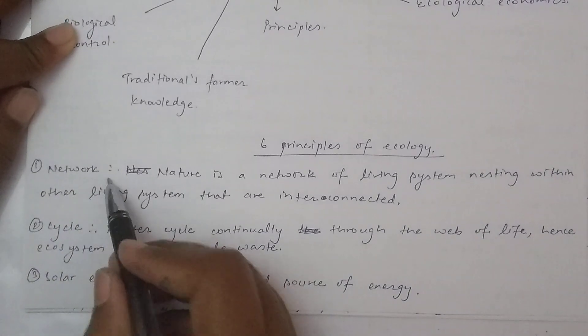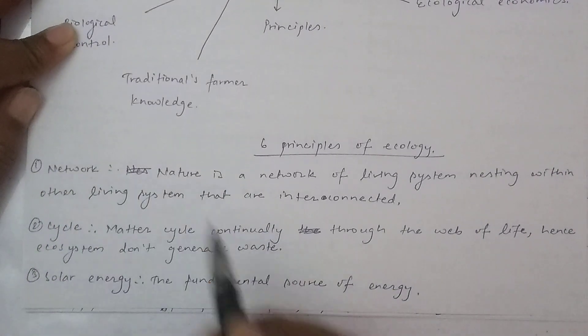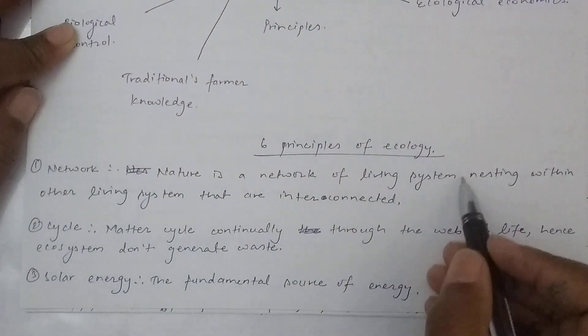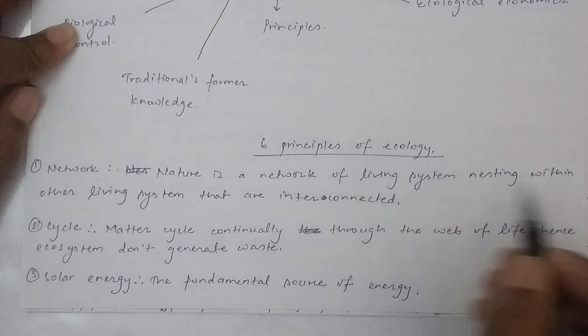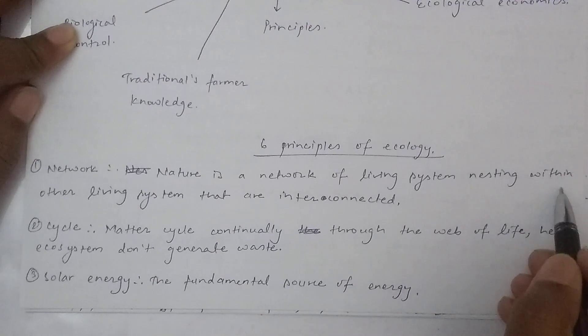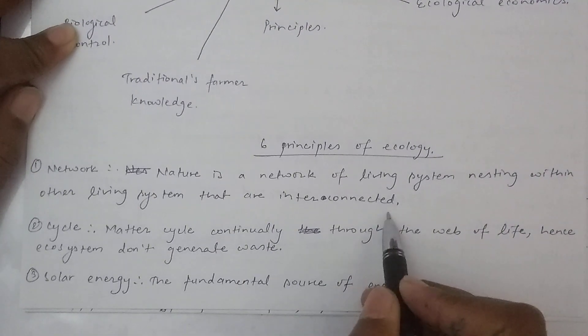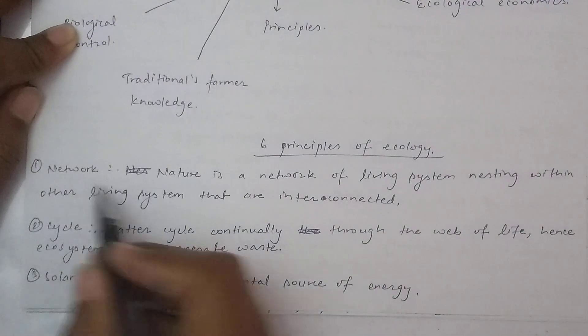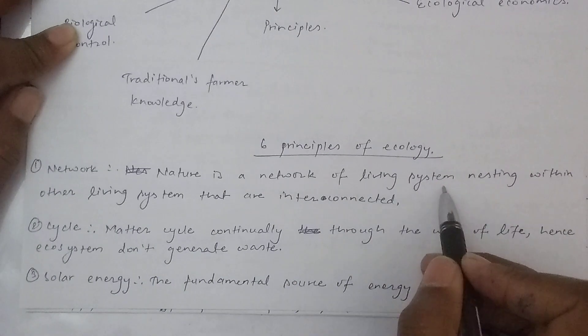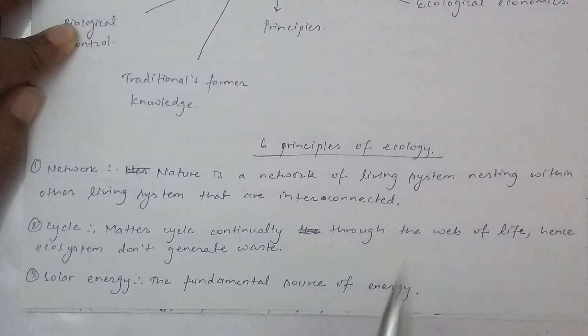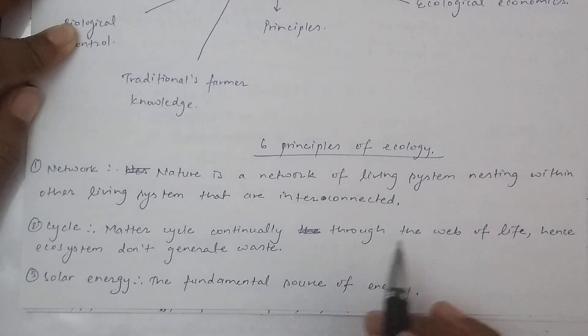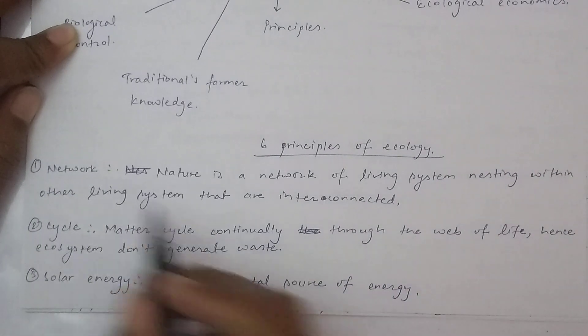The first principle is the network. Nature is a living system and other living systems are interconnected. This is the link — the living system is the interconnection and network.